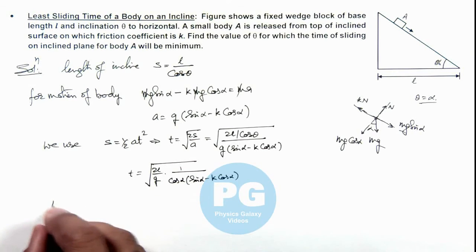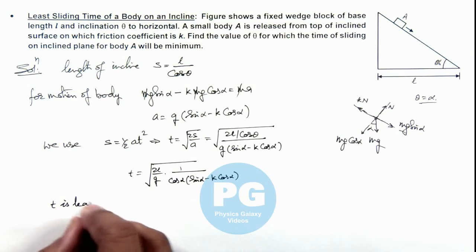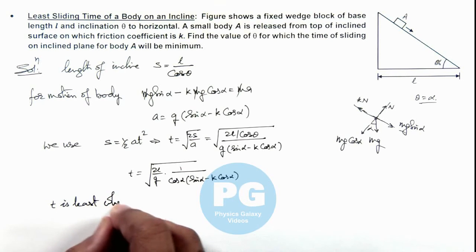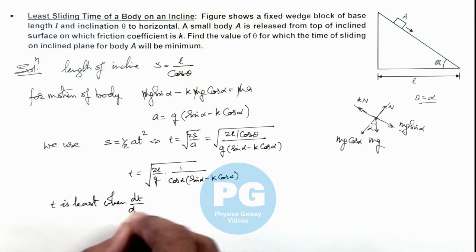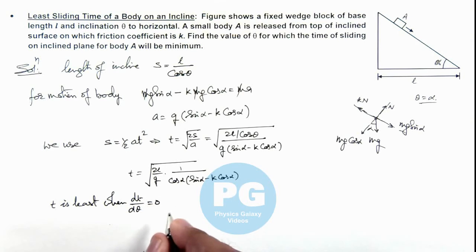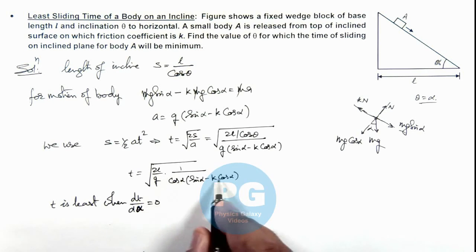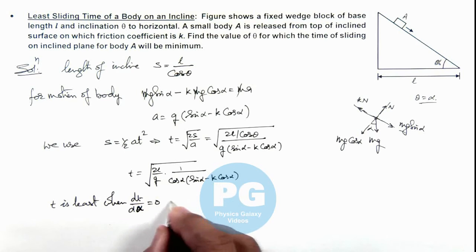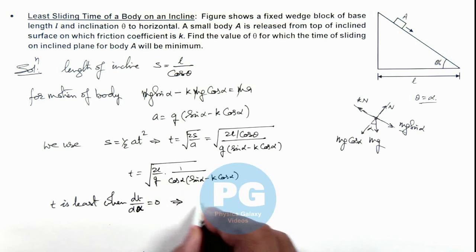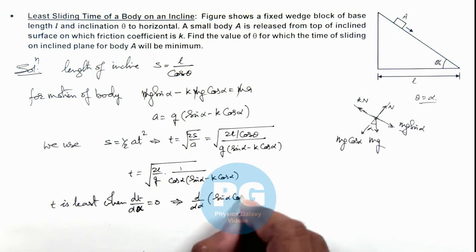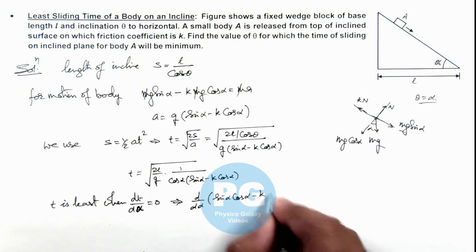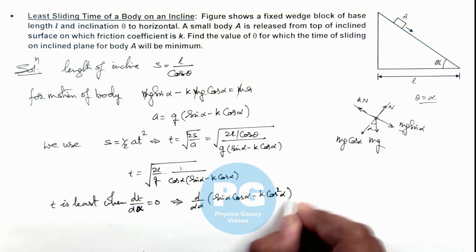For t to be least, we set dt/dtheta = 0, or equivalently dt/dalpha = 0. Since t is minimized when the denominator expression is maximized, we differentiate the denominator and equate it to zero. This means: d/dalpha [sin(alpha)·cos(alpha) − k·cos²(alpha)] = 0.